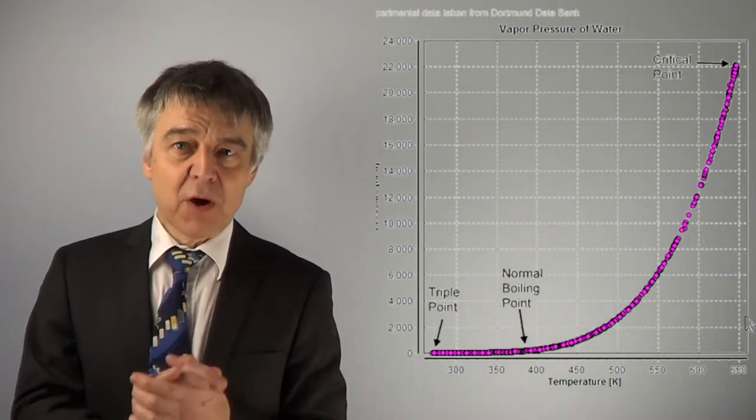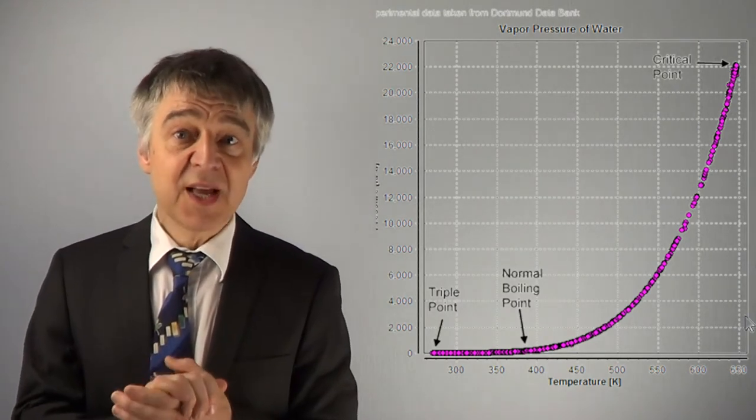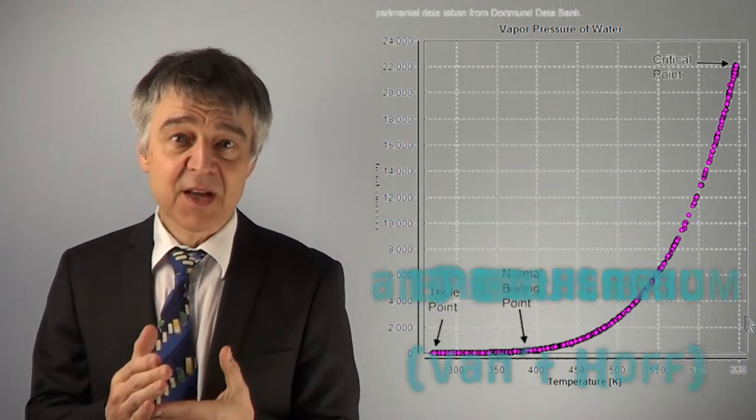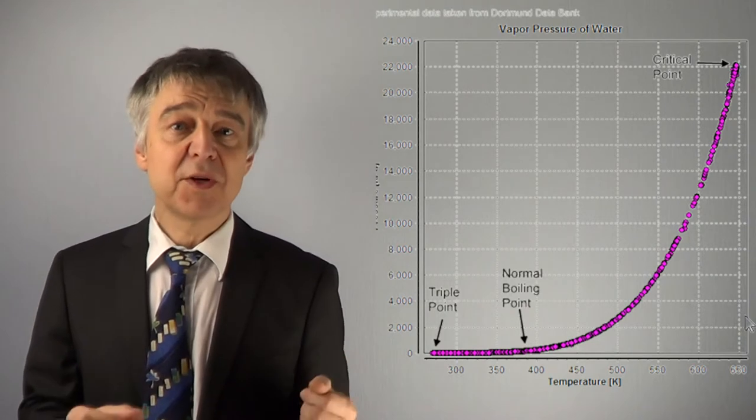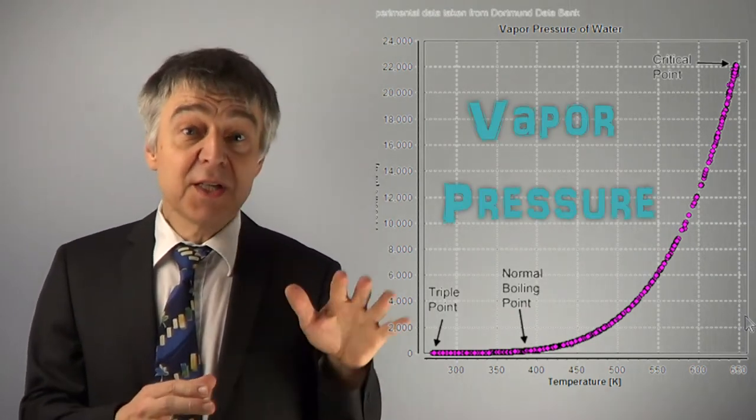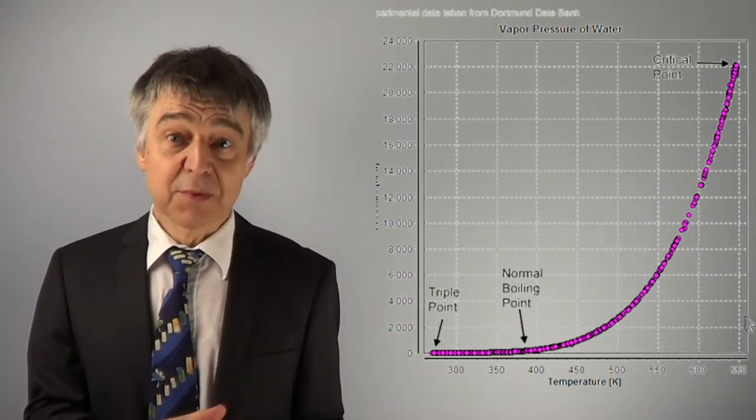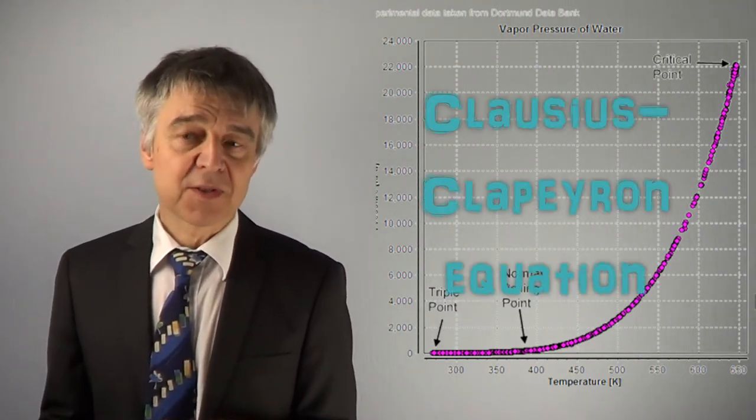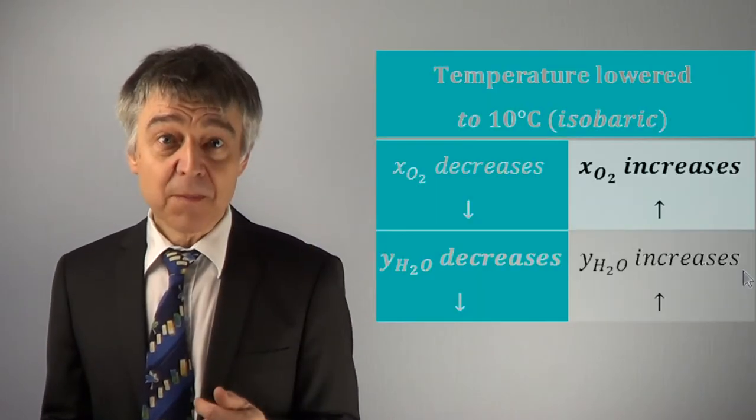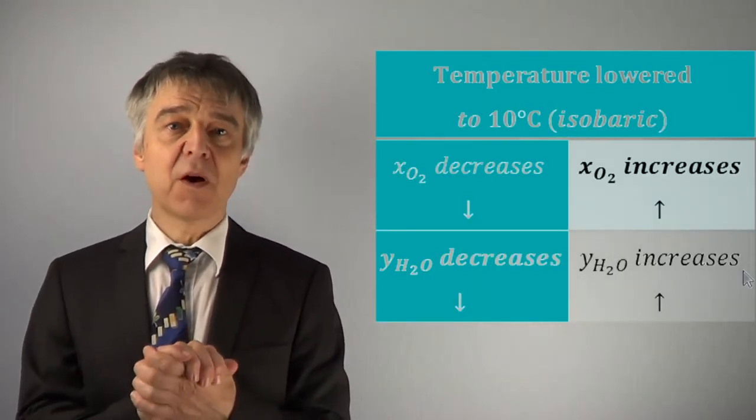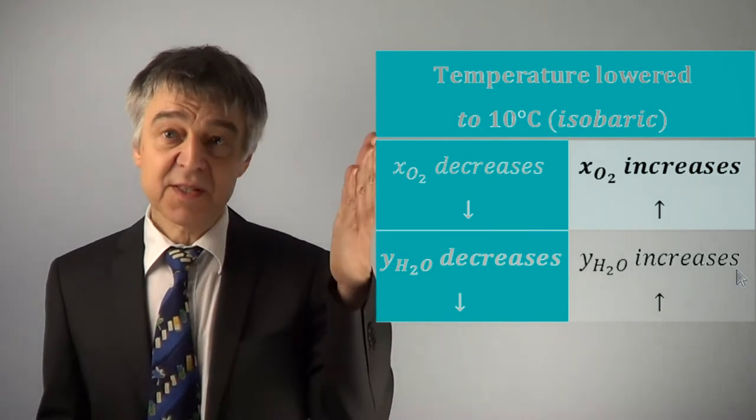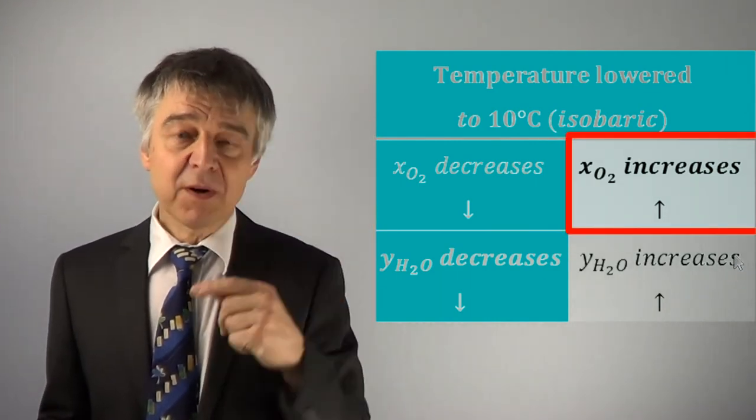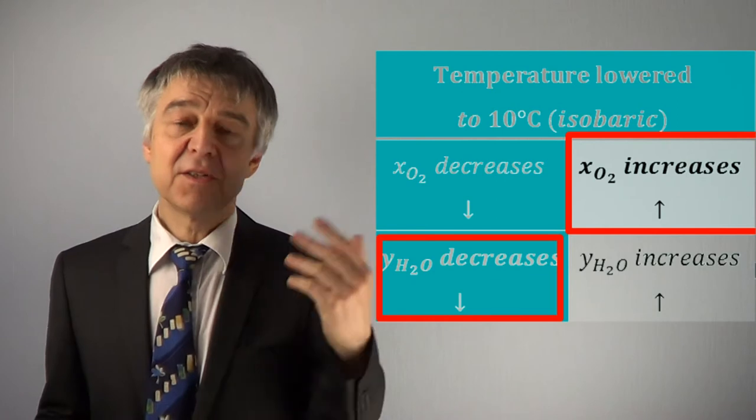The evaporation of the water, however, is an endothermic process. That is, the equilibrium constant of this process decreases with decreasing temperature, as can be calculated using Clausius-Clapeyron's equation. If we lower the temperature, the oxygen content of the water increases, while vapor content in the gas phase decreases.